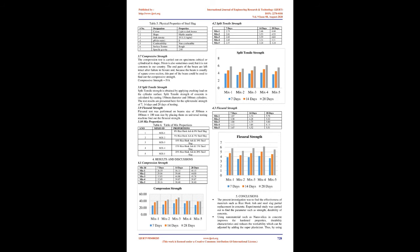3. Materials and Properties: The constituent materials used in this study are given below. 3.1 Cement: The cement used was ordinary Portland cement of 53 grade in accordance with IS 12269-1987. The cement should be fresh and of uniform consistency, stored under dry conditions and for as short a duration as possible.